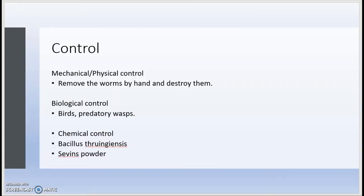Now for the control measures. As a mechanical or physical control, you can remove the worms by hand and destroy them. This is the most labor-intensive method, as you have to physically go to each head of lettuce and examine it for any worms, and then pick them all by hand.